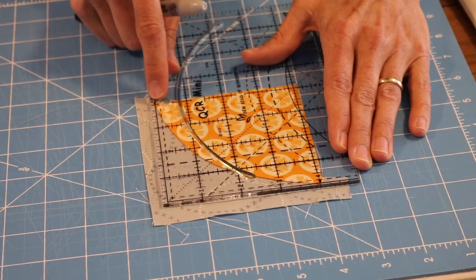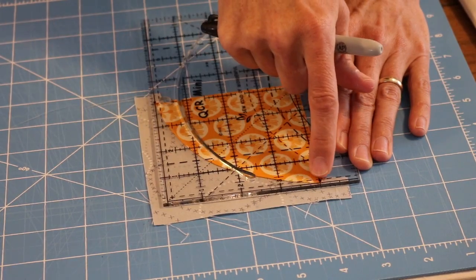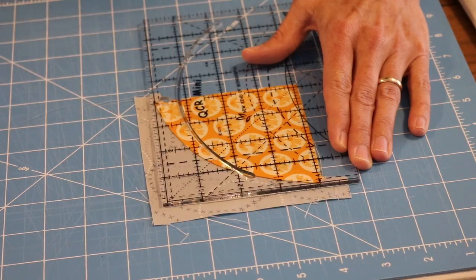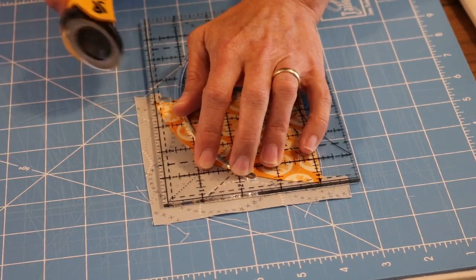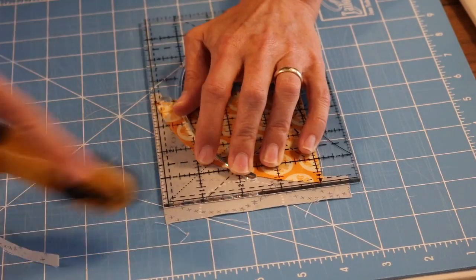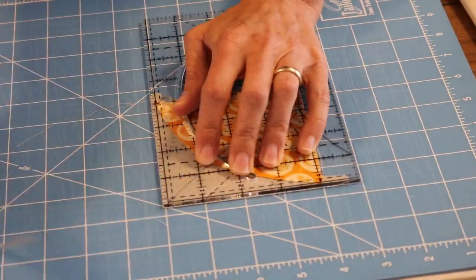So my seam is going to sit right underneath this dot here and that dot. And once I'm all lined up, I'm going to trim off my two sides.